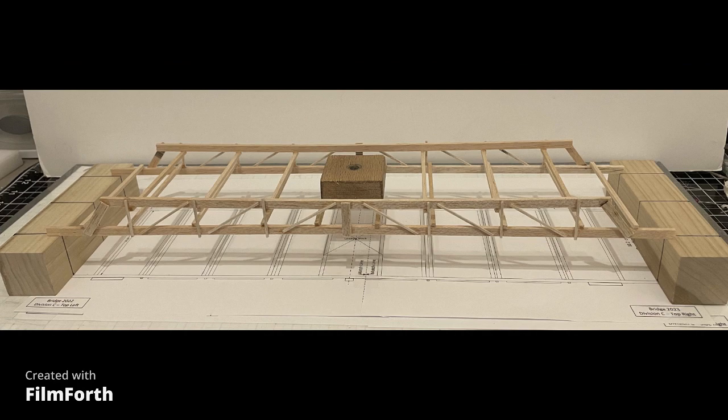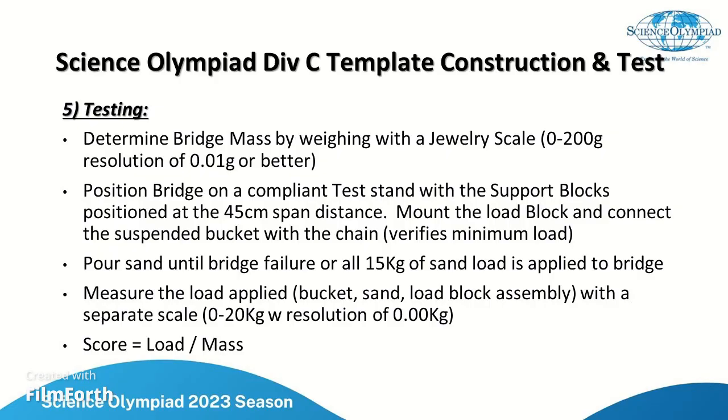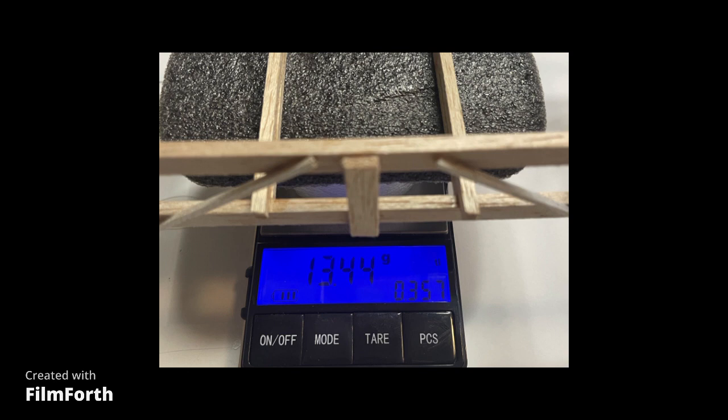You see there's a span there at the 45 and the width of the 10.2 and then the load block height here the one centimeter. The bridge is done so now we're ready for testing. We'll weigh the structure, mount onto the test stand, perform a load test and determine the score. So before we do the load testing we need to measure the mass of the bridge, and for this Division C template bridge weighs in at 13.44 grams.